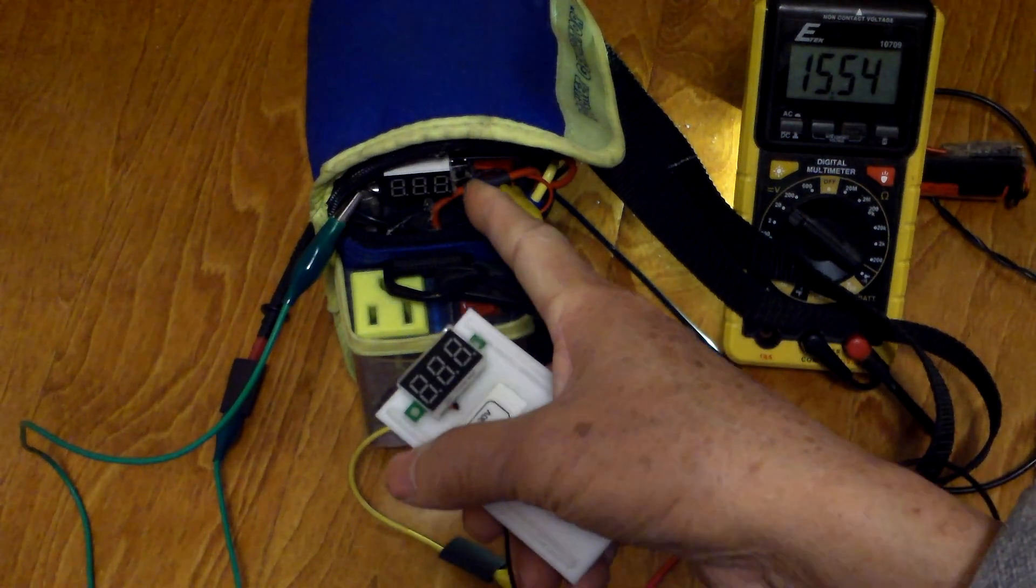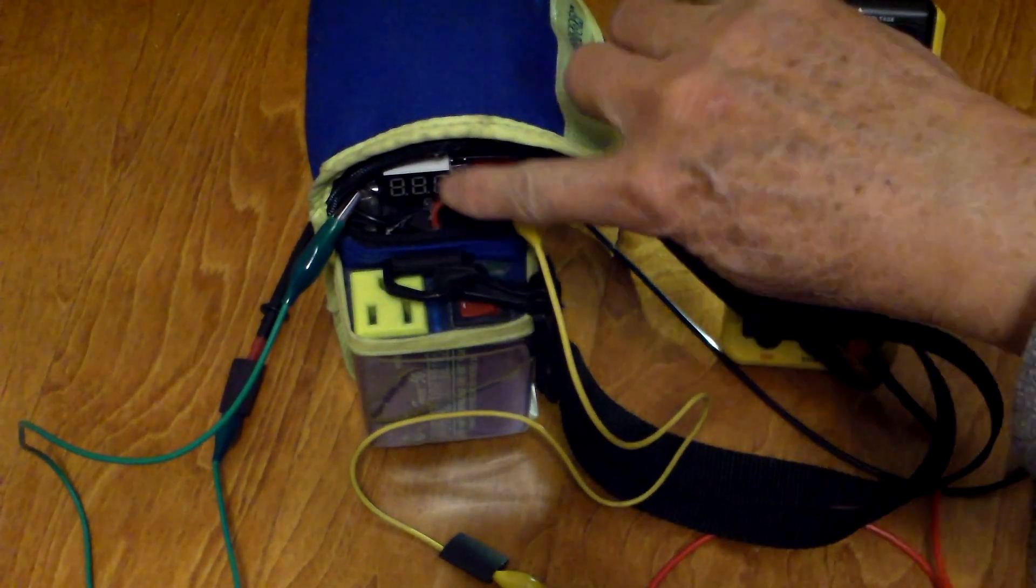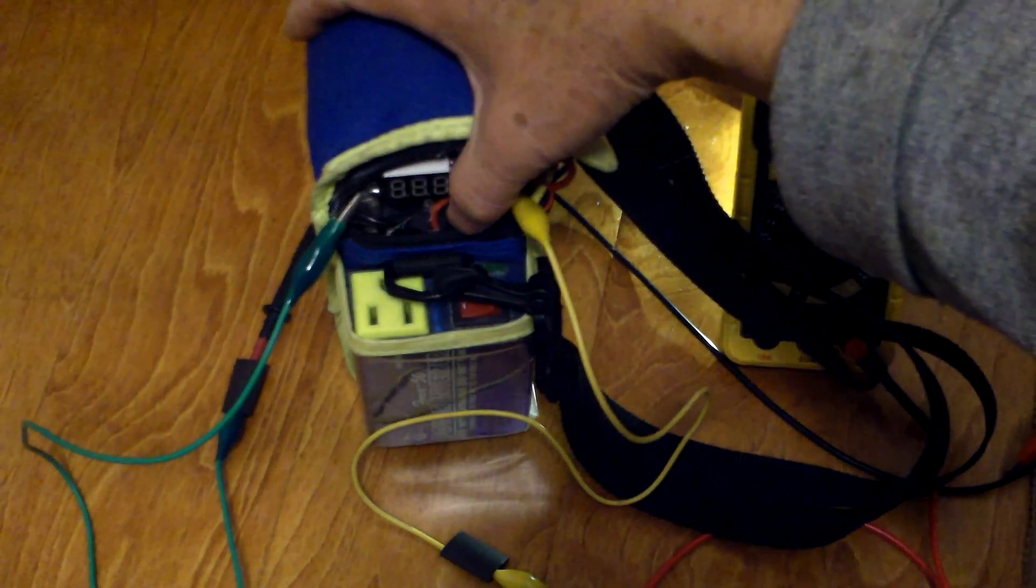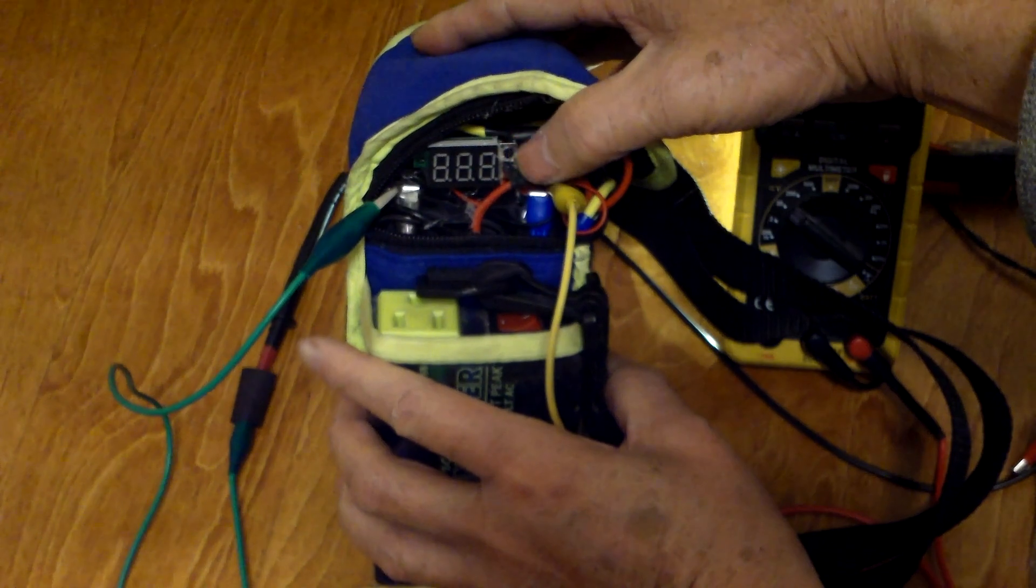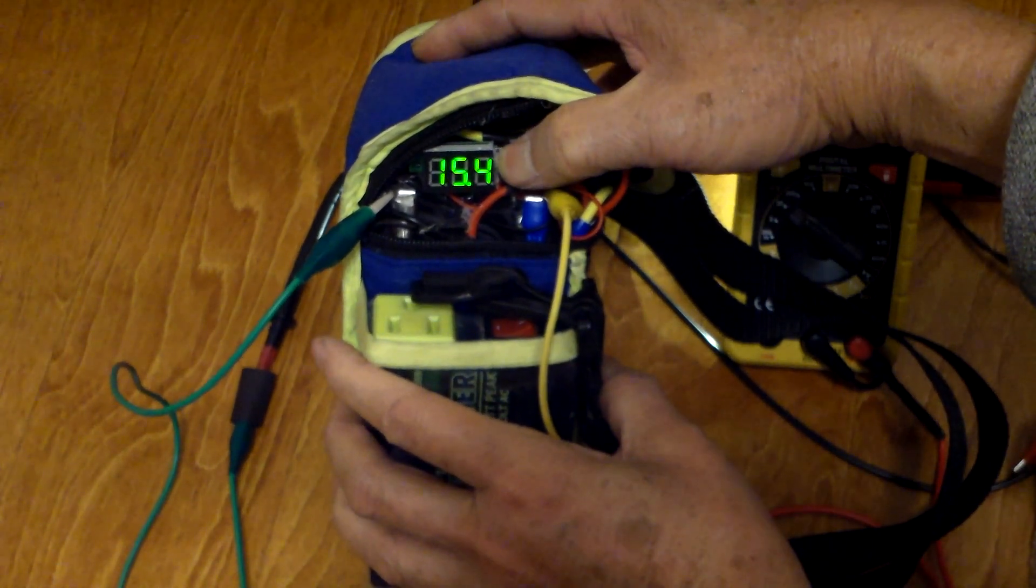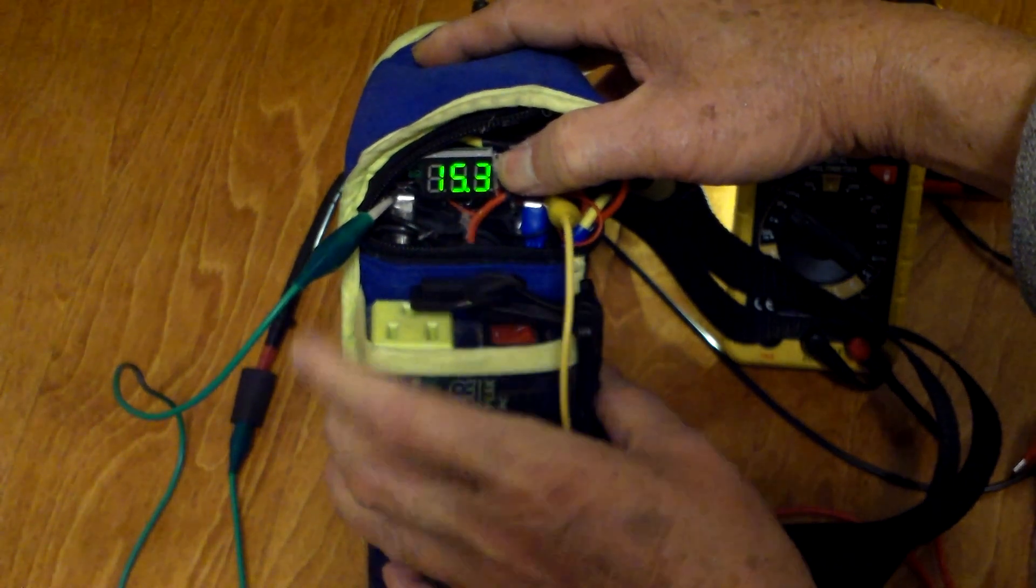I used a momentary switch to make the connection so the meter won't be on all the time. In order to do a reading, I just press a button here, and it gives me the voltage of the battery.